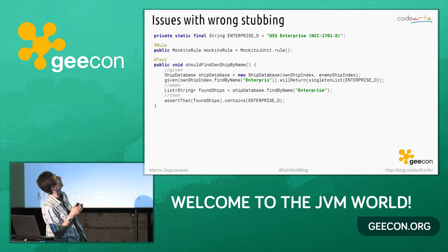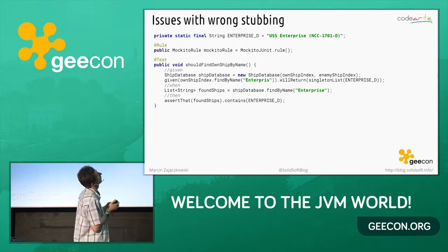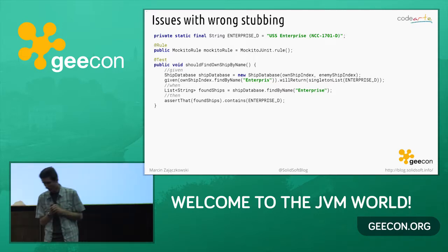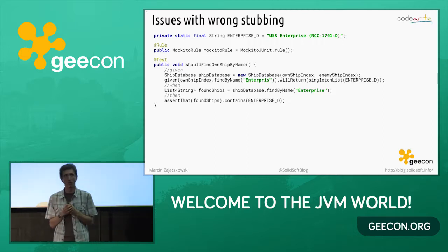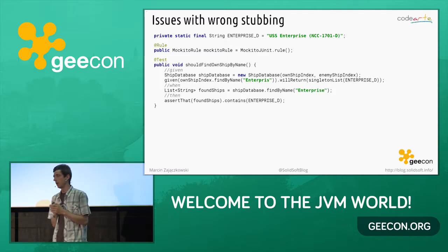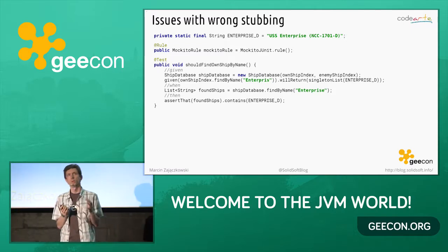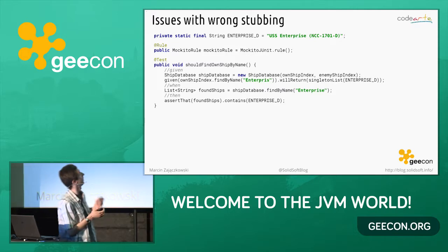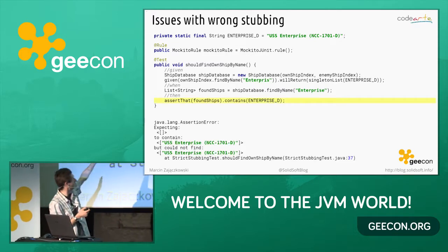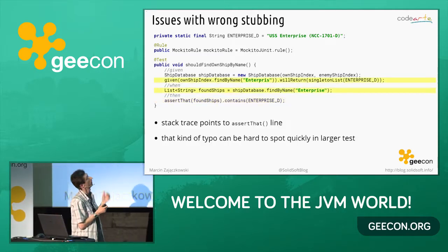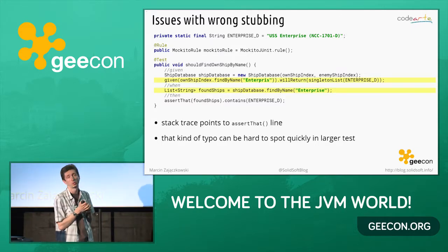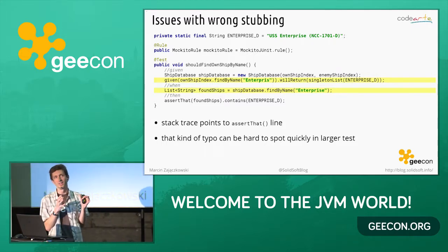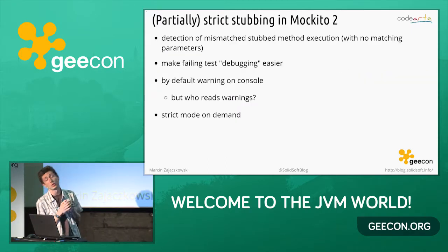Here is a simplified example: we have a ship database that allows searching for ships by name and production year, and under the hood it uses ship indexes. In the test, we verify that when finding a ship by name, the underlying index will be used. When you execute the test, we see that we expect Enterprise-D to be returned but we get an empty list. It's just a few lines, so you can probably spot the typo — 'Enterprise' without the 'E'. However, with several lines of stubbing it's not easy to detect.